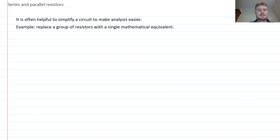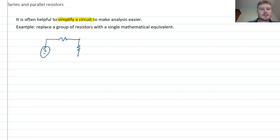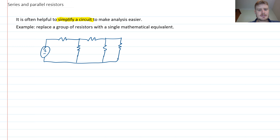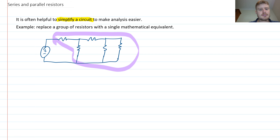One idea that's really useful in circuit theory is the idea of simplifying a circuit. This is a way that we can make analysis easier by giving us a simpler circuit layout to analyze. Suppose you had some network of resistors — a big blob of resistors — and you wanted to turn that into something a little bit easier to work with.